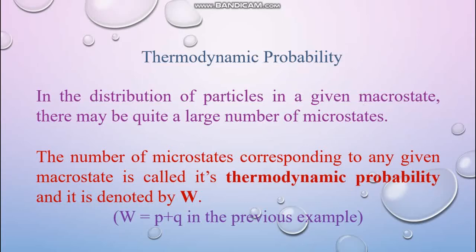Now let's move on to thermodynamic probability. In the distribution of particles in a given macrostate, there may be quite a large number of microstates. When tossing a coin, the number of macrostates is 1 — that is one phenomenon taking place. But there are two possible outcomes: either head or tail, giving two microstates. So the thermodynamic probability of that event is 2. The number of microstates corresponding to any given macrostate is called its thermodynamic probability, and it is denoted by W. So W equals p plus q.